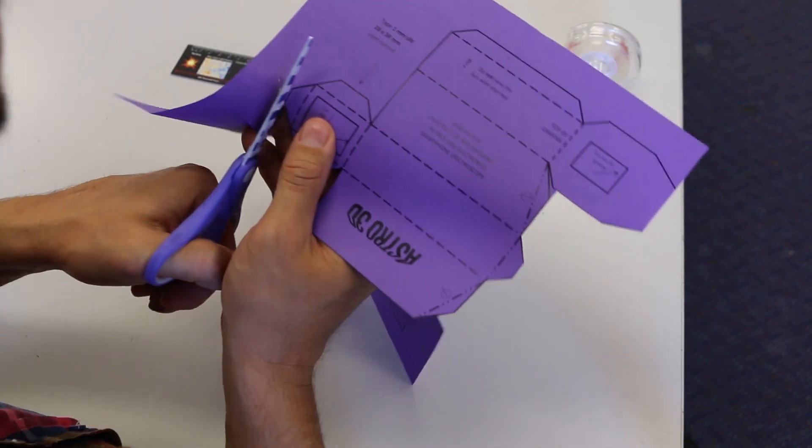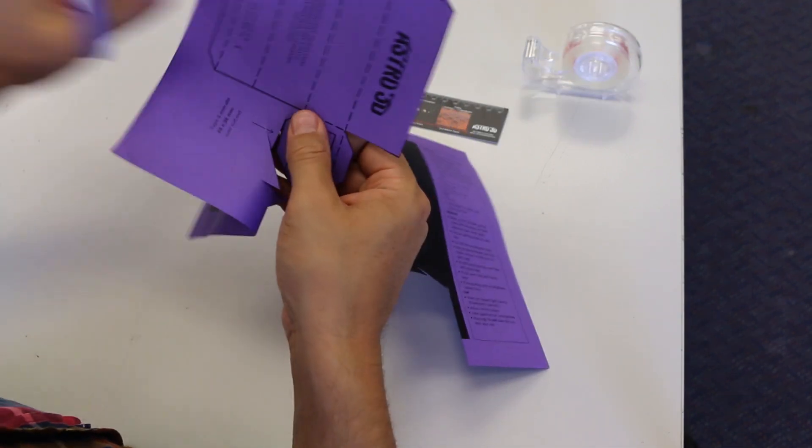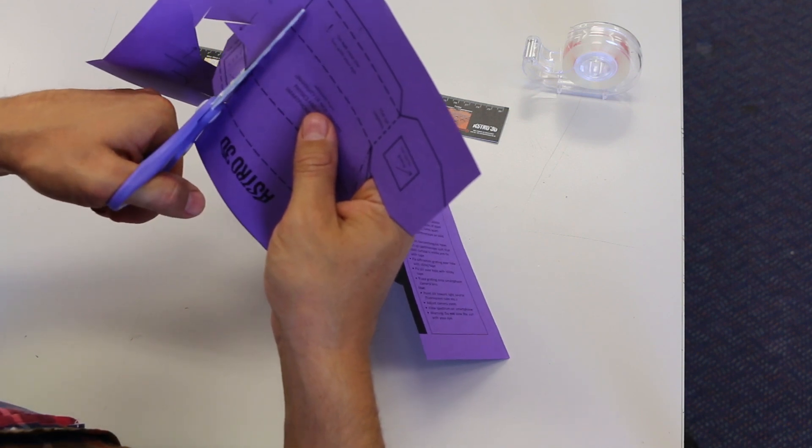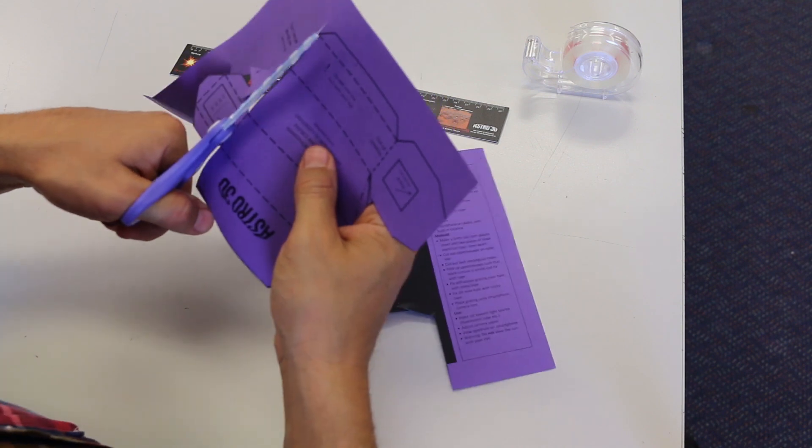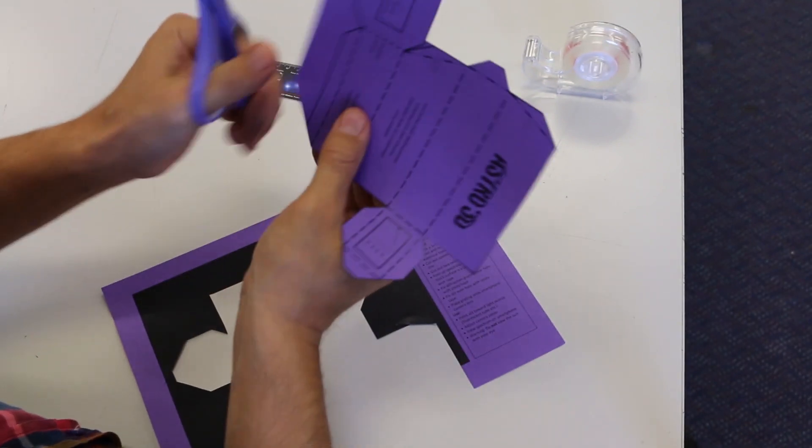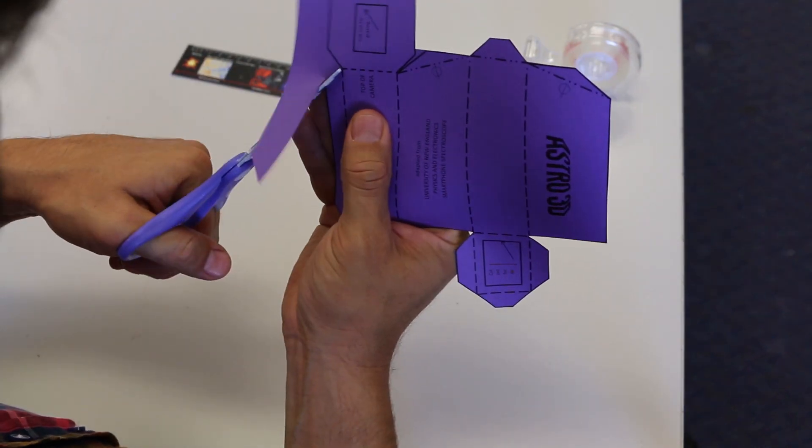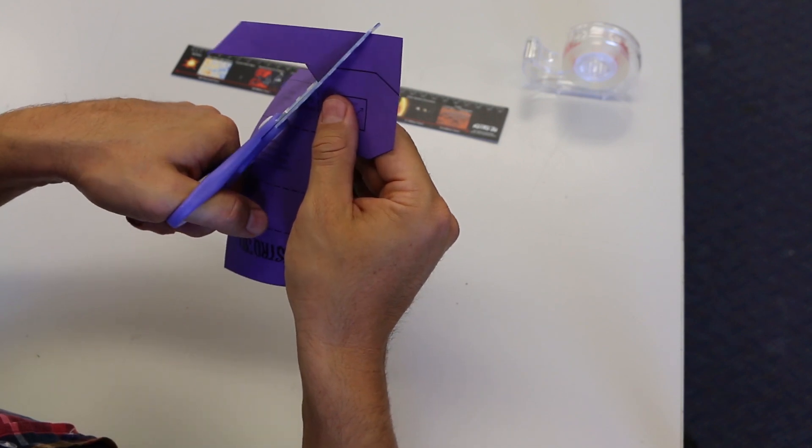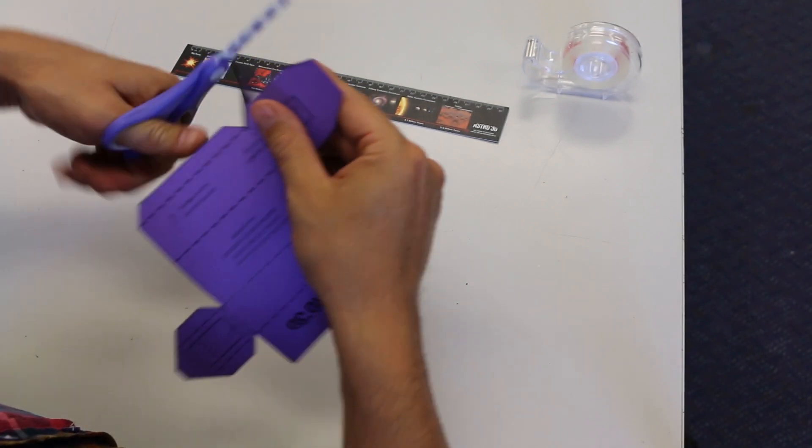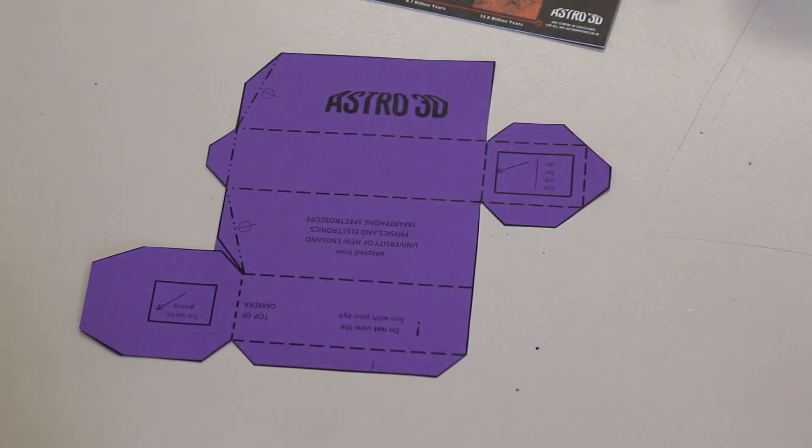You don't want to rush it but you don't need to be too meticulous with your cuts. Just once again following that black solid line around the outside. The reason why the other side of the page is black is because that forms the interior of the spectroscope, and we want that interior to be black to absorb any extraneous light that's bouncing around the inside there. So there we go, that's the spectroscope plan fully cut out there.